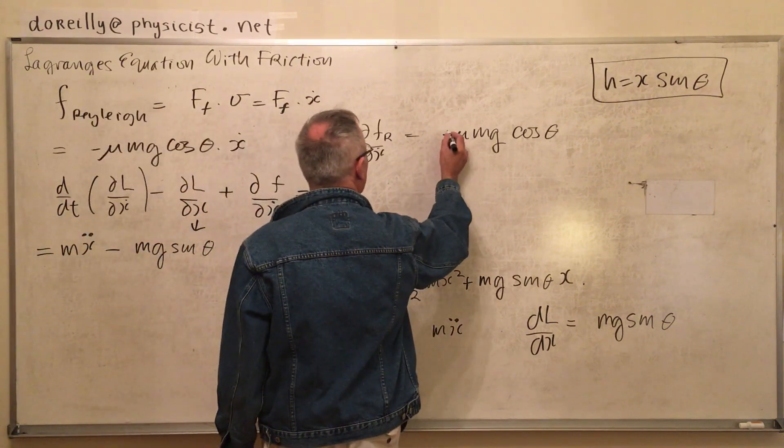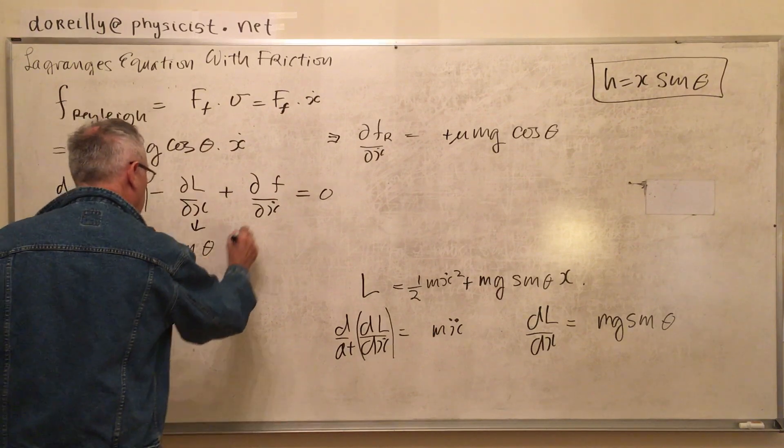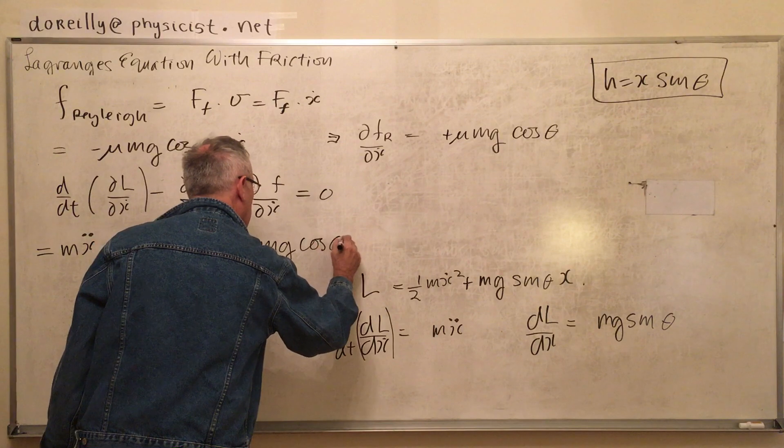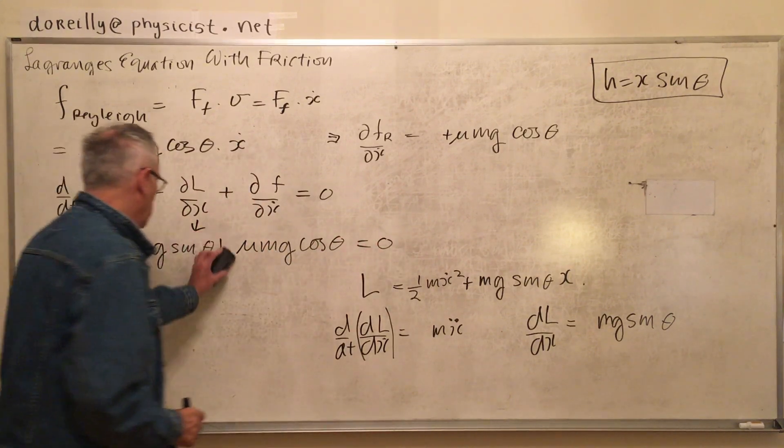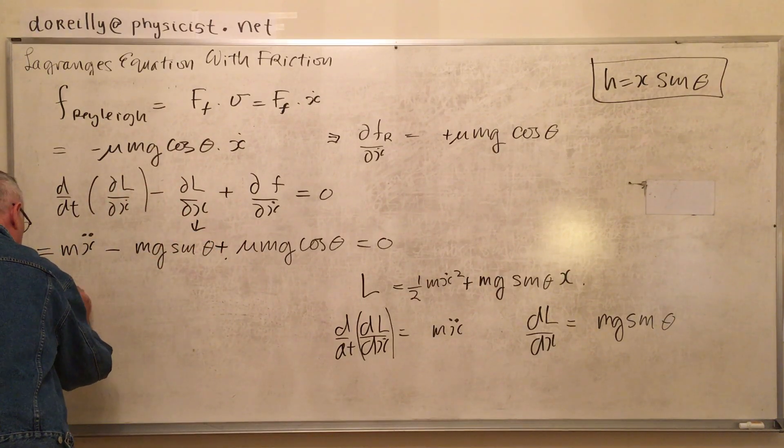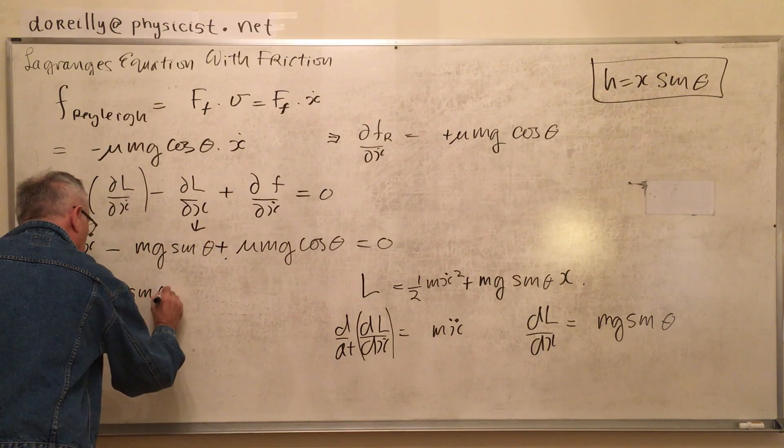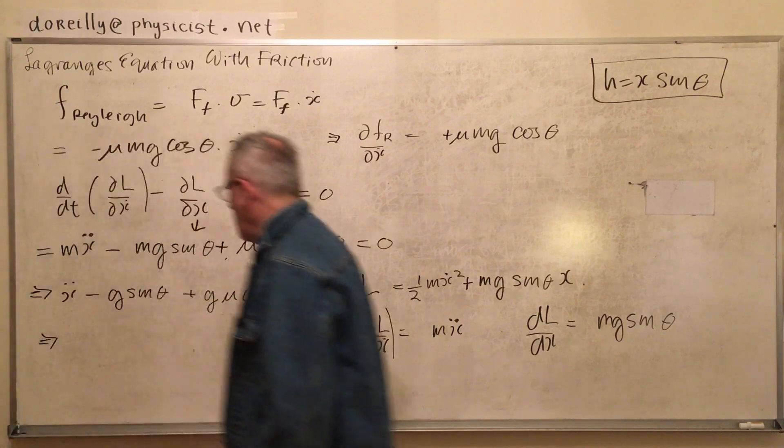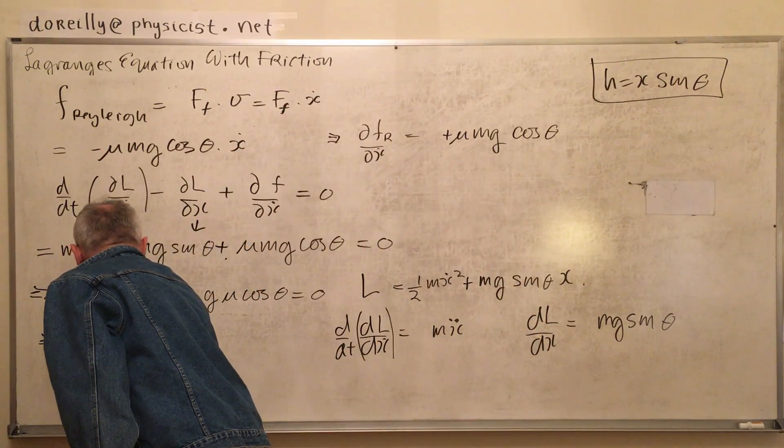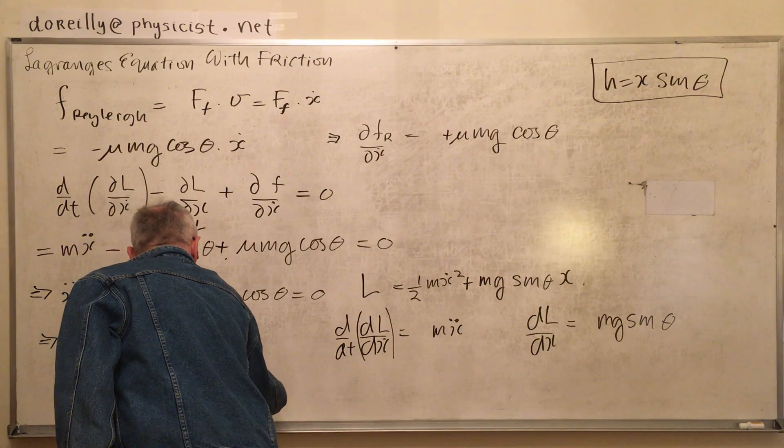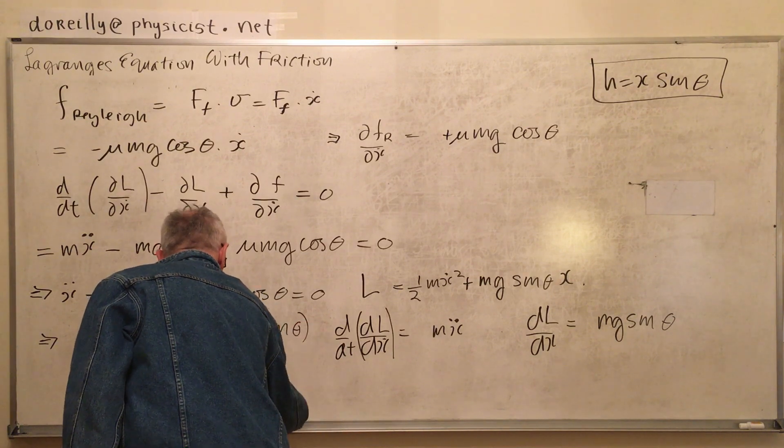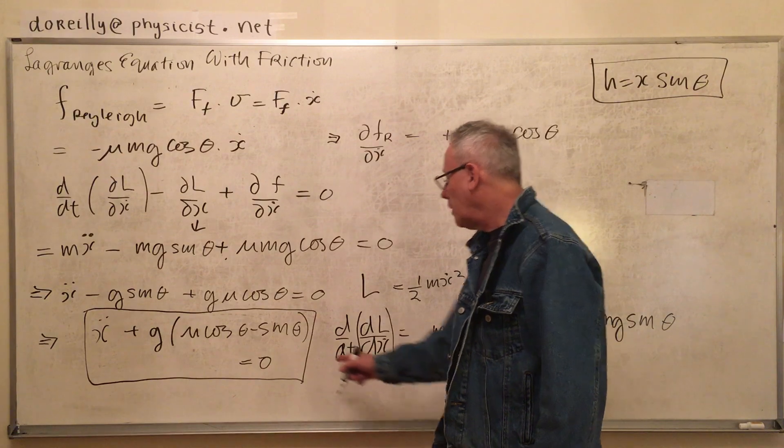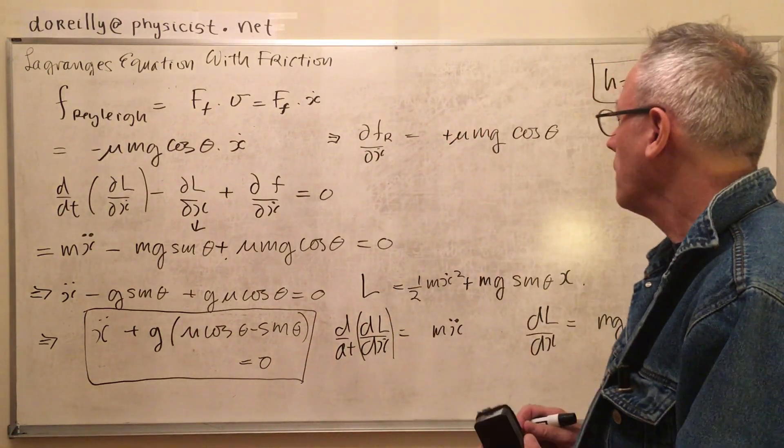Plus dF by dx dot is going to be plus mu mg cosine theta, all equals zero. So we're down to x double dot. To get the equations of motion, you have to check the signs in case I made a mistake. That's the equation of motion including friction. Let's do a different problem.